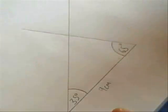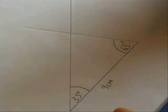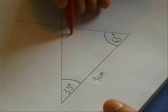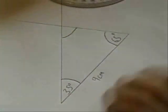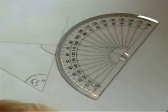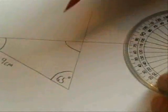Now, a typical exam question may ask you to do this construction and then measure this remaining angle here. I'm just going to turn my pad around to make it easier for me. So I'm going to measure this angle here.